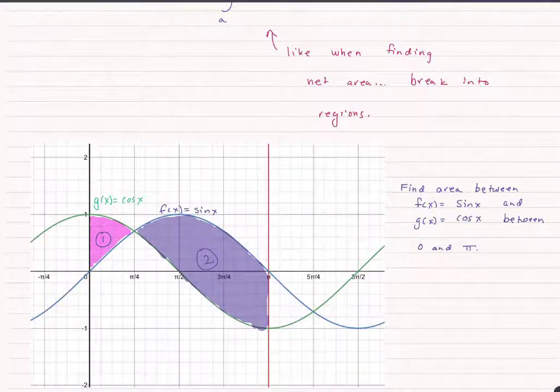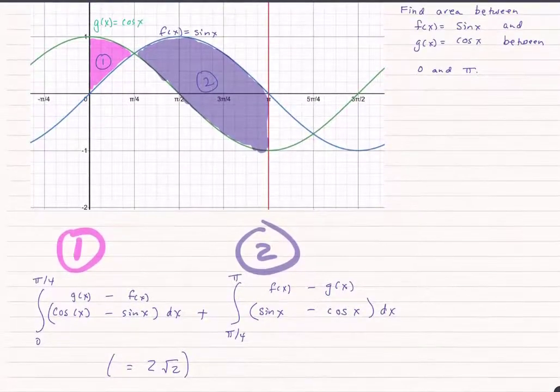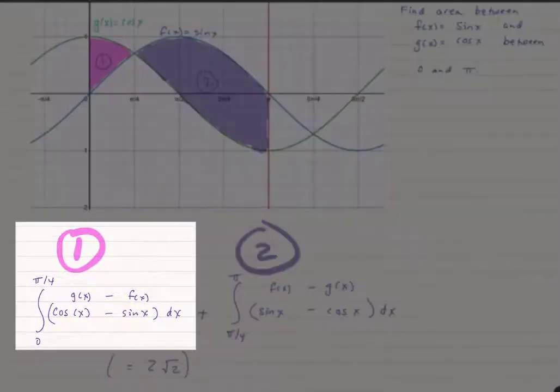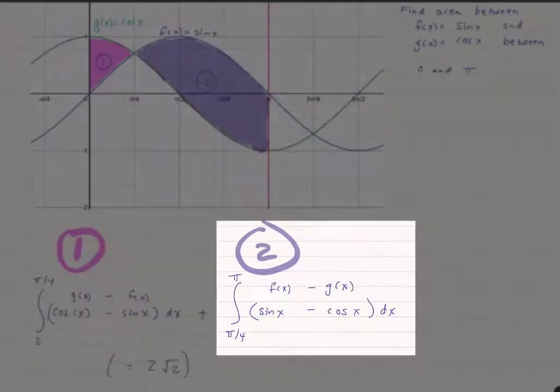So that means we're going to set up our integration like this. We're going to have the first region from zero to pi over four of cosine of x minus sine of x, because again in this case g of x is the greater function, plus the area of the second region which is from pi over four to pi, but this time it's going to be the upper function sine x, which happens to be f of x, minus g of x, the lower function.